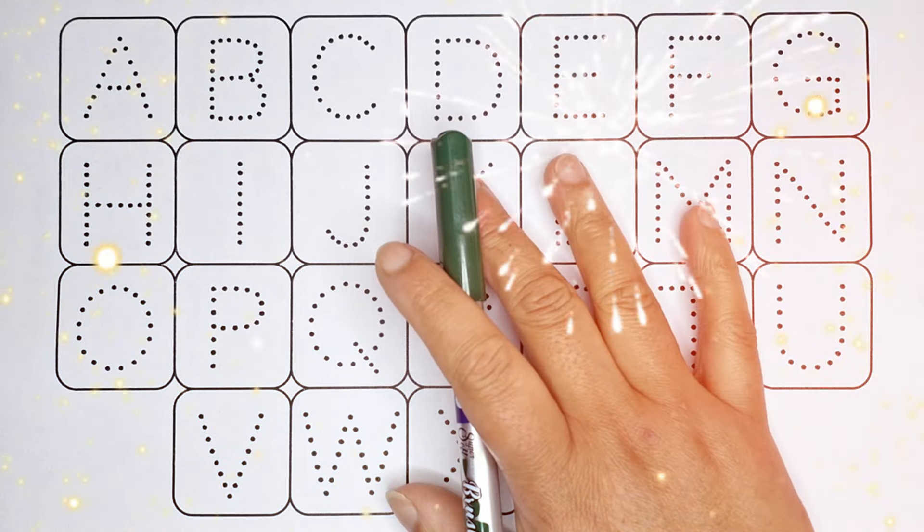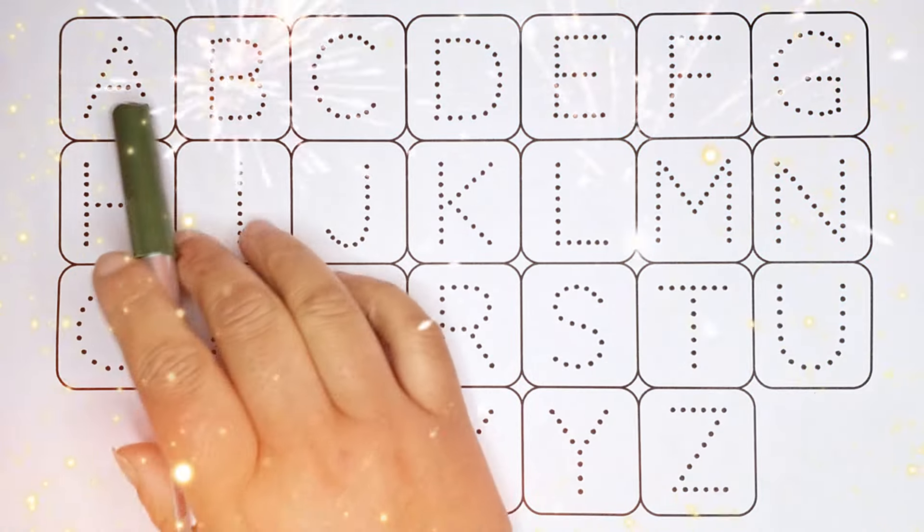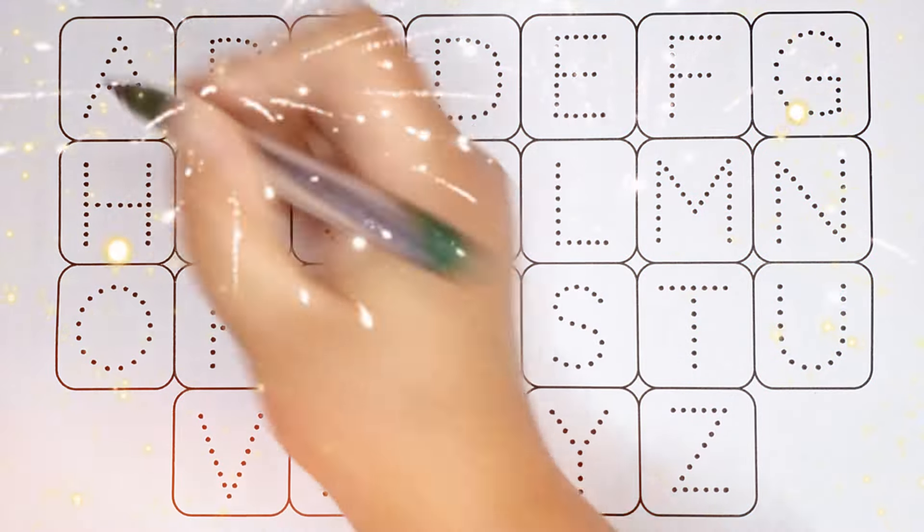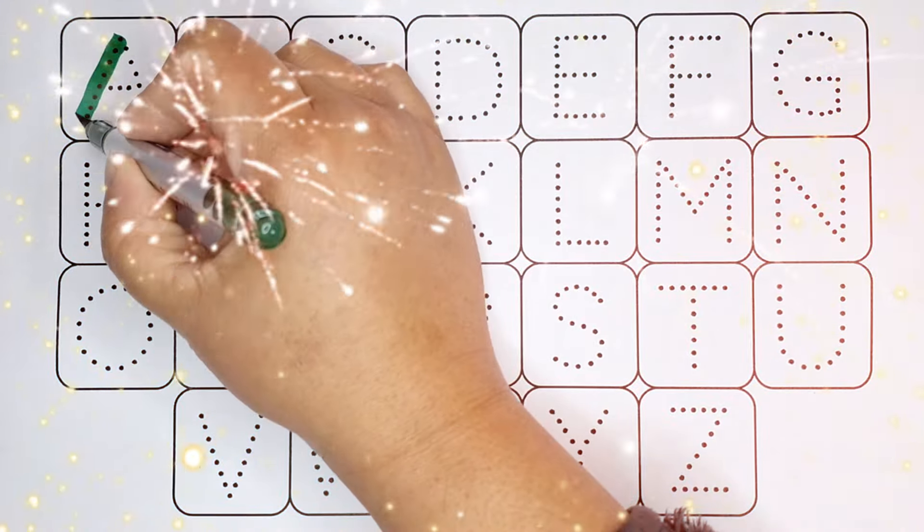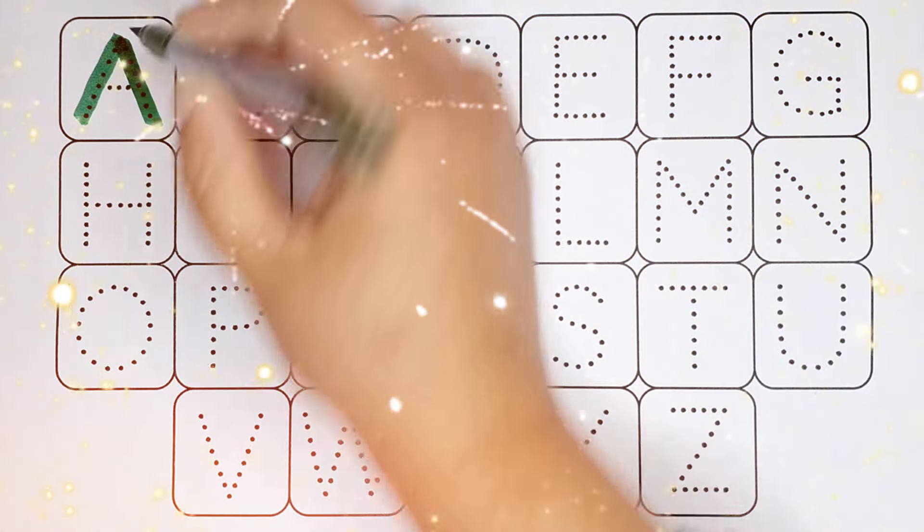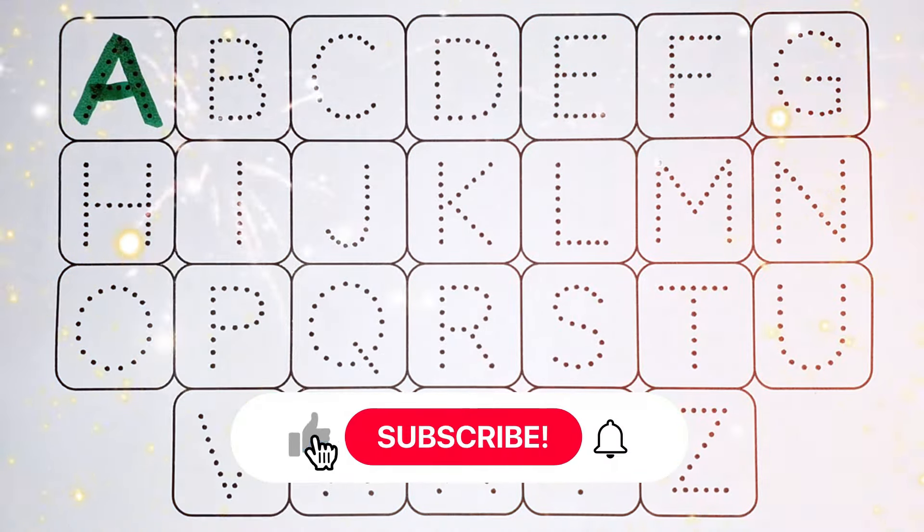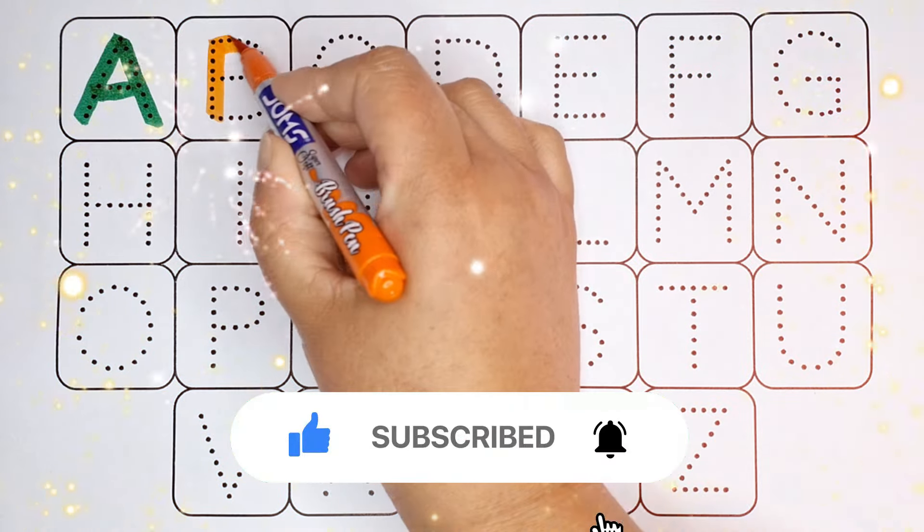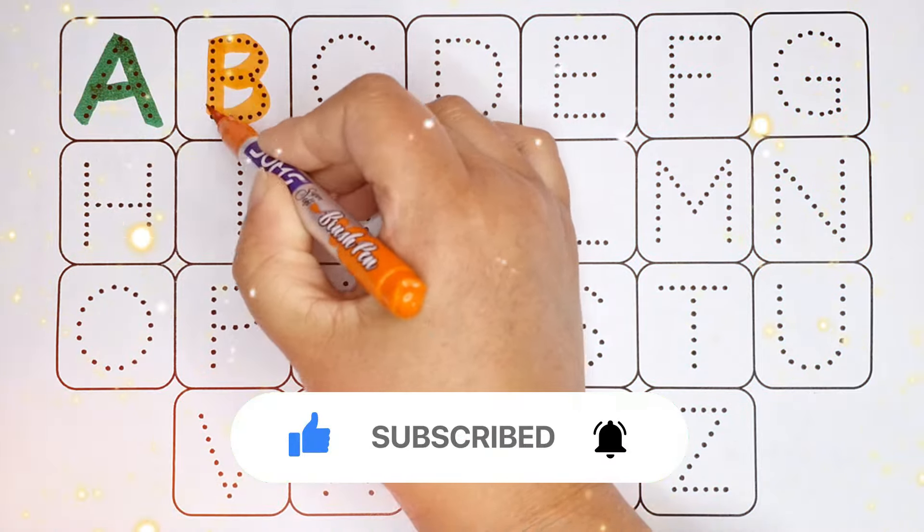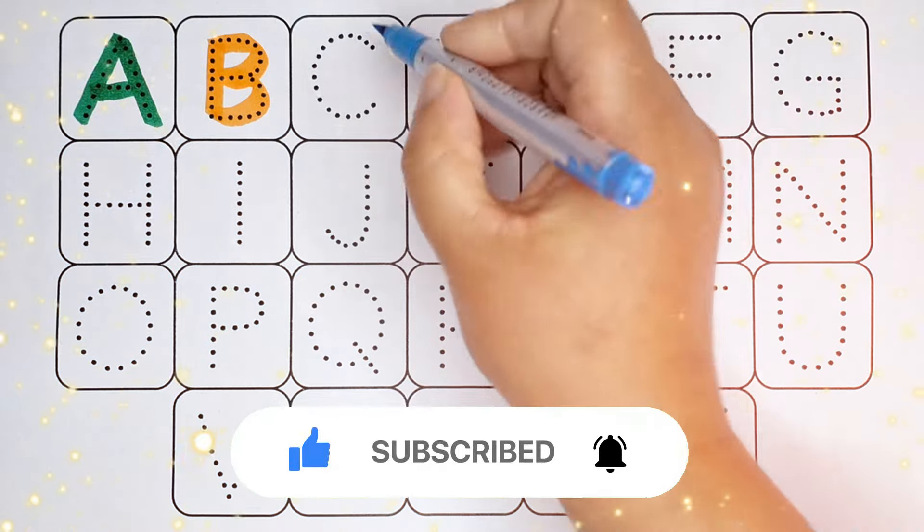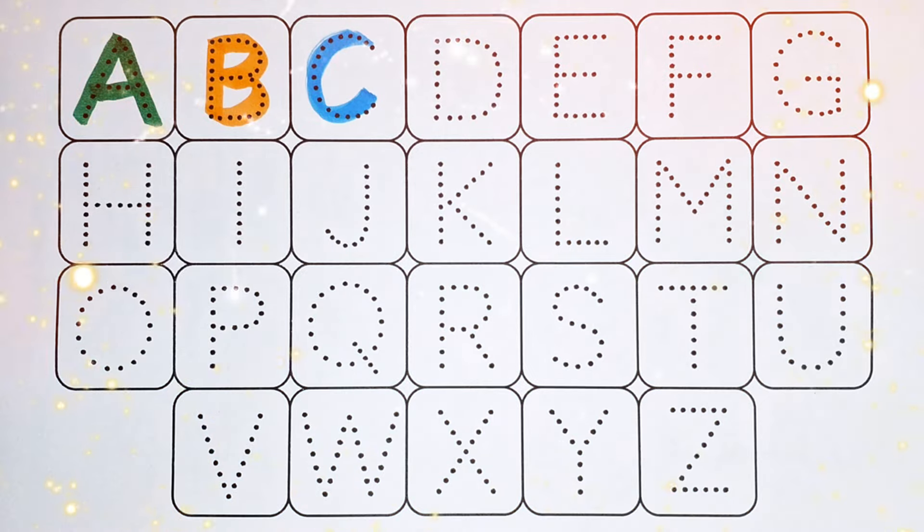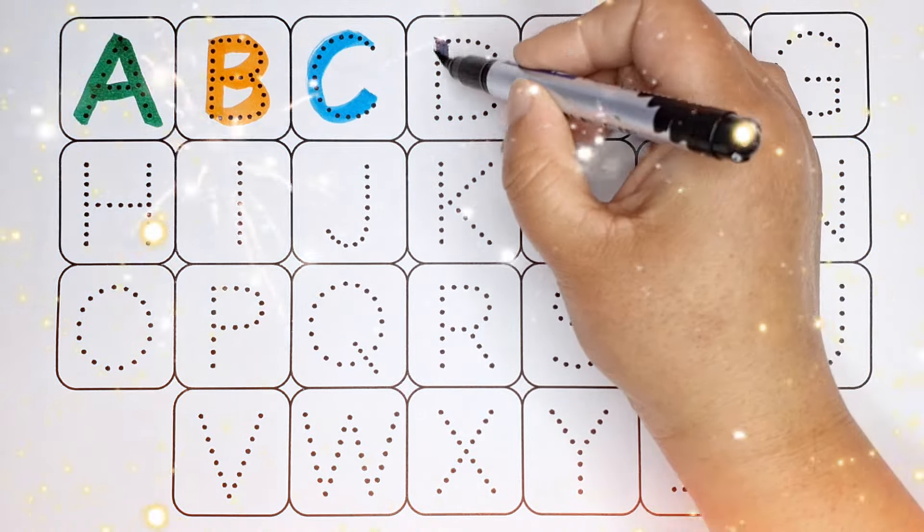Hello kids, welcome back. Let's learn alphabet letters A to Z. Dark green color A, A for alligator. Orange color B, B for balloon. Sky blue color C, C for chili.